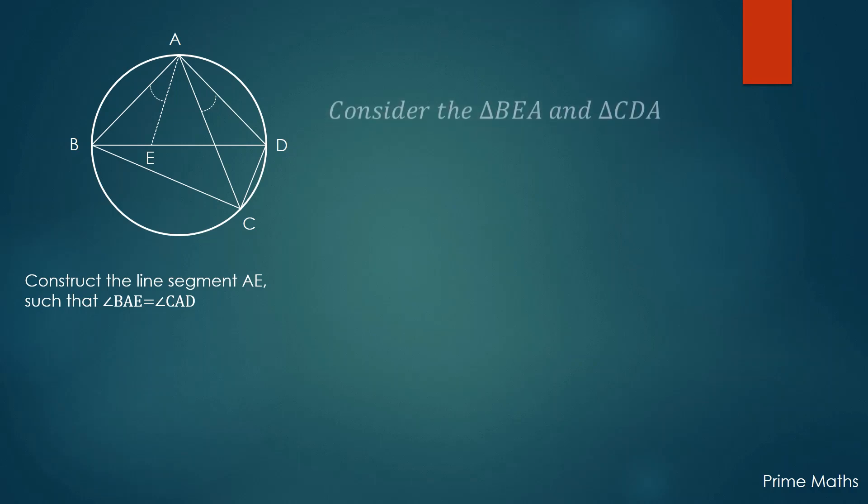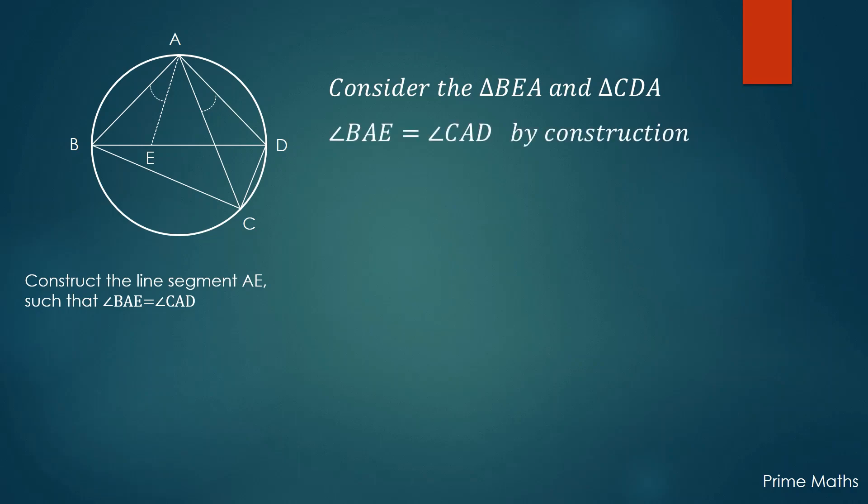Consider the triangle BEA and triangle CDA. By construction, angle BAE is equal to angle CAD. Now the angle ABE is equal to the angle ACD, since they are the angles in the same segment—that is, they are the angles at the circumference subtended by the same arc AD.